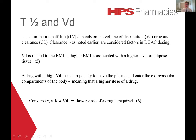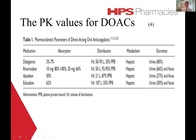A drug with a high volume of distribution has a tendency to move into the extravascular components of the body, meaning that a higher dose may be needed to achieve a given plasma concentration. Conversely, a low volume of distribution means that a lower dose may be required. Dabigatran has a VD of 50 to 70 litres, rivaroxaban has a VD of 50 litres, and apixaban has a VD of 21 litres. As an important aside, enoxaparin has a VD of approximately 6 litres.